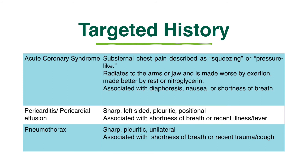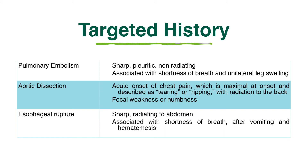Pericarditis or pericardial effusion will have sharp left-sided pleuritic positional chest pain and is associated with shortness of breath or recent illness or fever. Pneumothorax has a sharp pleuritic unilateral chest pain and is associated with shortness of breath or recent trauma and cough. Pulmonary embolism demonstrates a sharp pleuritic non-radiating chest pain and is associated with shortness of breath and sometimes unilateral leg swelling. Aortic dissection has an acute onset of chest pain, maximal at onset and described as tearing or ripping, with radiation to the back, and is associated with focal weakness or numbness. Esophageal rupture usually has a sharp chest pain that radiates to the abdomen and is associated with shortness of breath or hematemesis, and this occurs after bouts of vomiting.